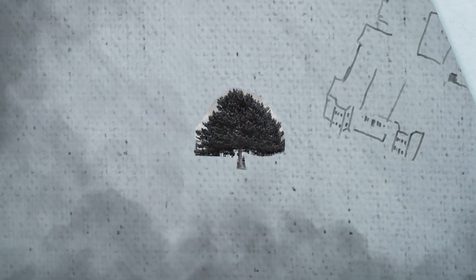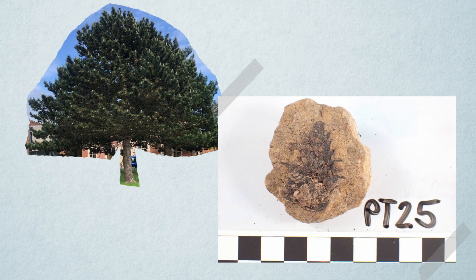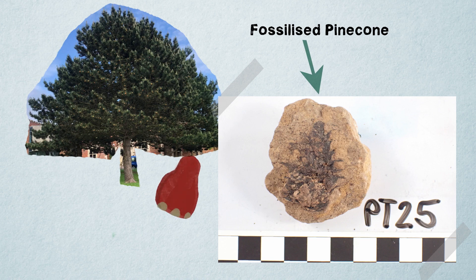Most of them would have been evergreen pine trees like the ones you can see outside the museum. This is a fossilized pine cone from those trees that grew alongside dinosaurs and provided food to many of them.